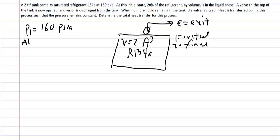At state point 1, it is 20% liquid by volume. There is a valve on top of the tank and the vapor is discharged. Keep in mind that in a two-phase mixture, the saturated liquid has much greater density and settles to the bottom of the tank, while the saturated vapor with lower density fills the top portion. So it is really only the saturated vapor that leaves this particular tank.